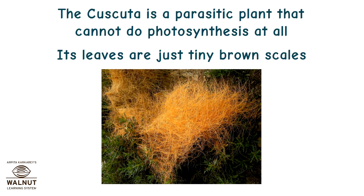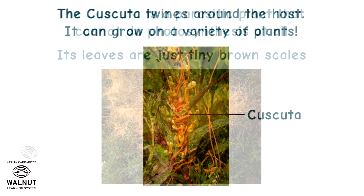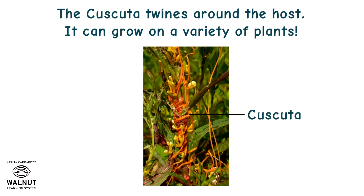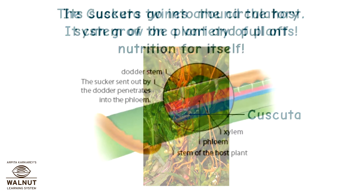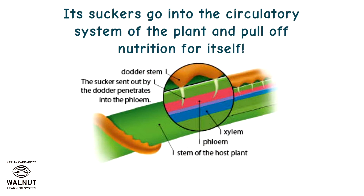Its leaves are just tiny brown scales. The Cascuta twines around the host and can grow on a variety of plants. Its suckers go into the circulatory system of the plant and pull off nutrition for itself.